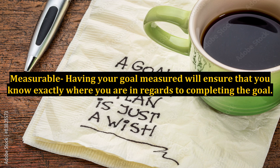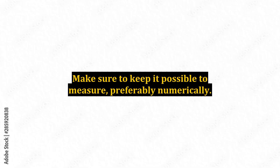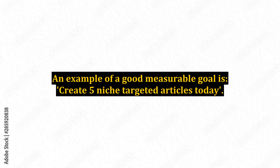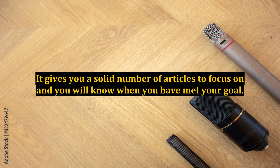Measurable — having your goal measured will ensure that you know exactly where you are in regards to completing the goal. Make sure to keep it possible to measure, preferably numerically. An example of a good measurable goal is: create 5 niche-targeted articles today. It gives you a solid number of articles to focus on and you will know when you have met your goal.